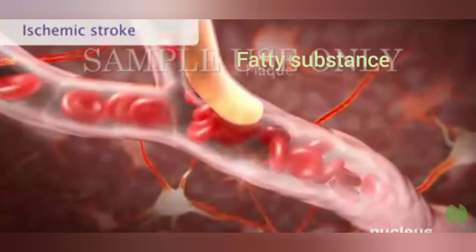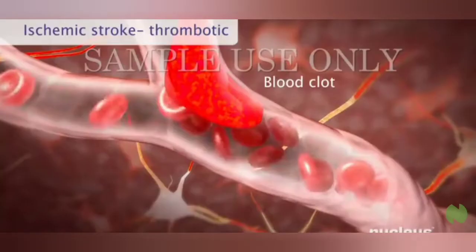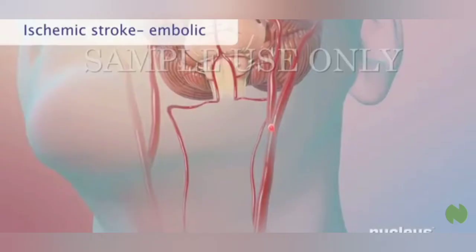Ischemic stroke happens in an artery where a fatty substance called plaque has made the artery narrow. In one type of ischemic stroke called thrombotic stroke, this plaque can break apart and form a blood clot that blocks the flow of blood to the brain.